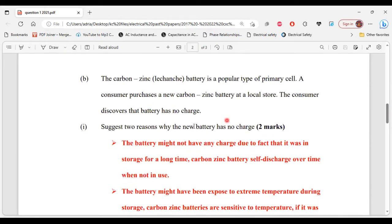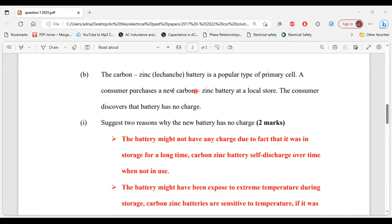Let's move on to part B. It says the carbon zinc battery is a popular type of primary cell. A consumer purchases a new carbon zinc battery at a local store. The consumer discovers that the battery has no charge. Part 1 of B says suggest two reasons why the new battery has no charge.